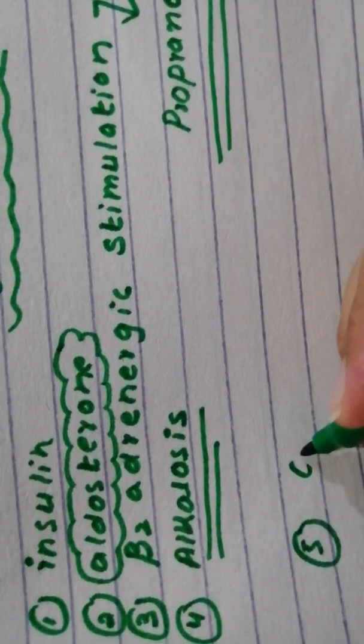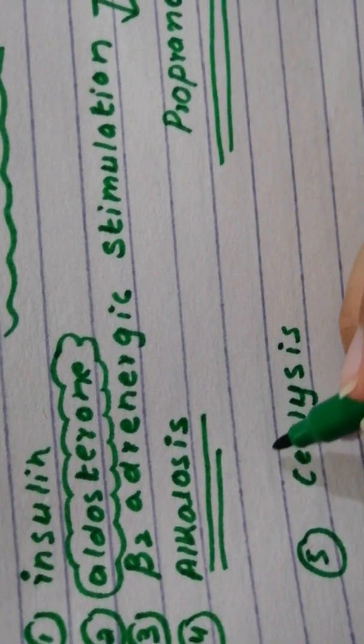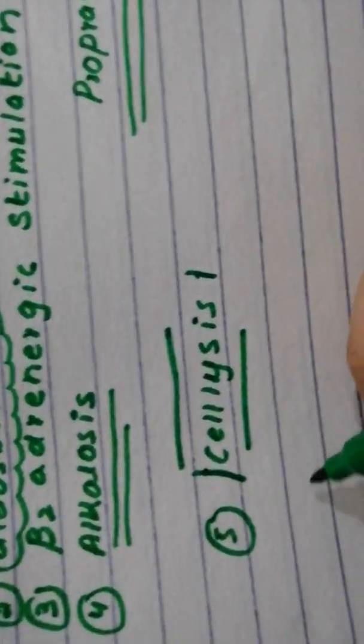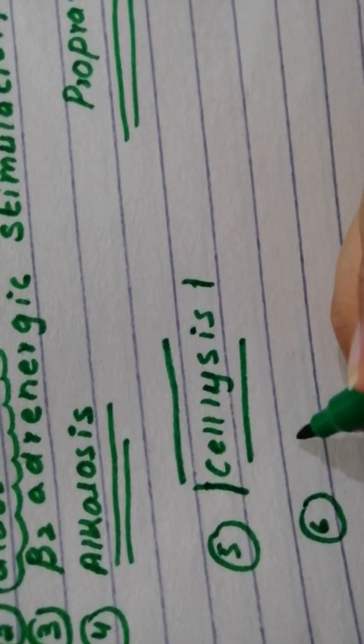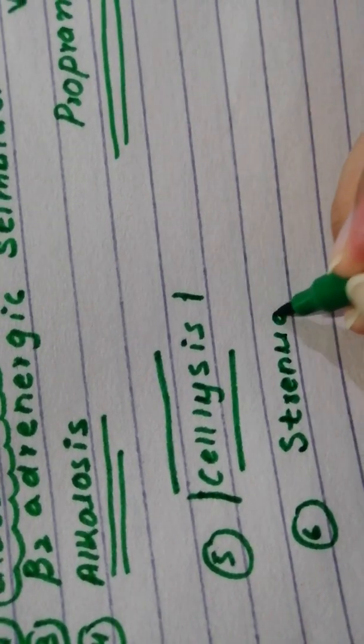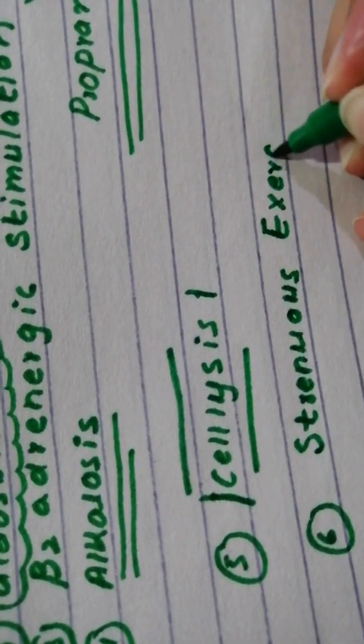One thing is cell lysis, especially if there is much tissue damage, red blood cell lysis, or very extensive injury. Sometimes if there is very strenuous exercise, that can lead to it.